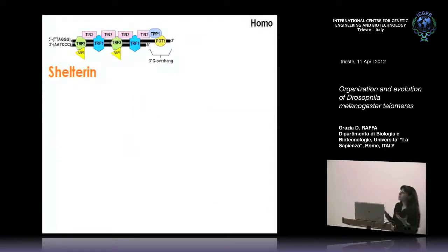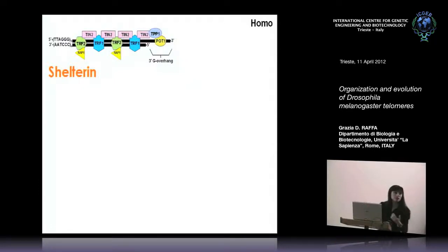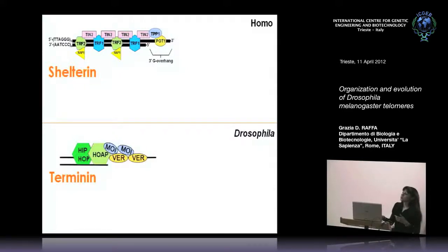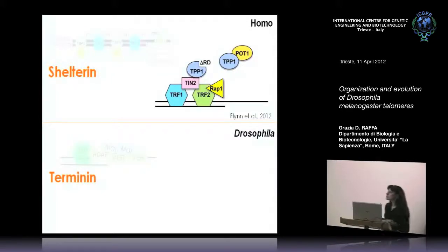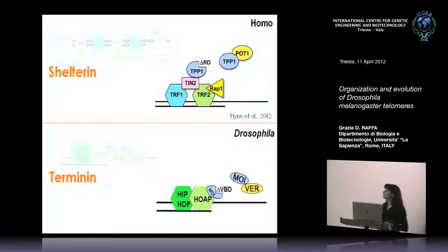If we look at the current model for shelterin protection of human telomeres, there are TRF2 and TRF1 that bind double-stranded DNA, then a bridge formed by TIN2 and TPP1 that recruits POT1, the single-stranded binding protein. Something similar happens in Drosophila: there is a double-stranded binding protein, HipHop, that recruits MOI protein, which recruits VER onto single-stranded DNA. The model looks quite similar. Recently, it was shown that if you express a deletion of TPP1 that lost the ability to bind POT1, this complex is completely removed from single-stranded DNA — and something similar is the case for Drosophila, where a deletion mutant of MOI prevents single-stranded DNA recognition by single-stranded binding proteins.